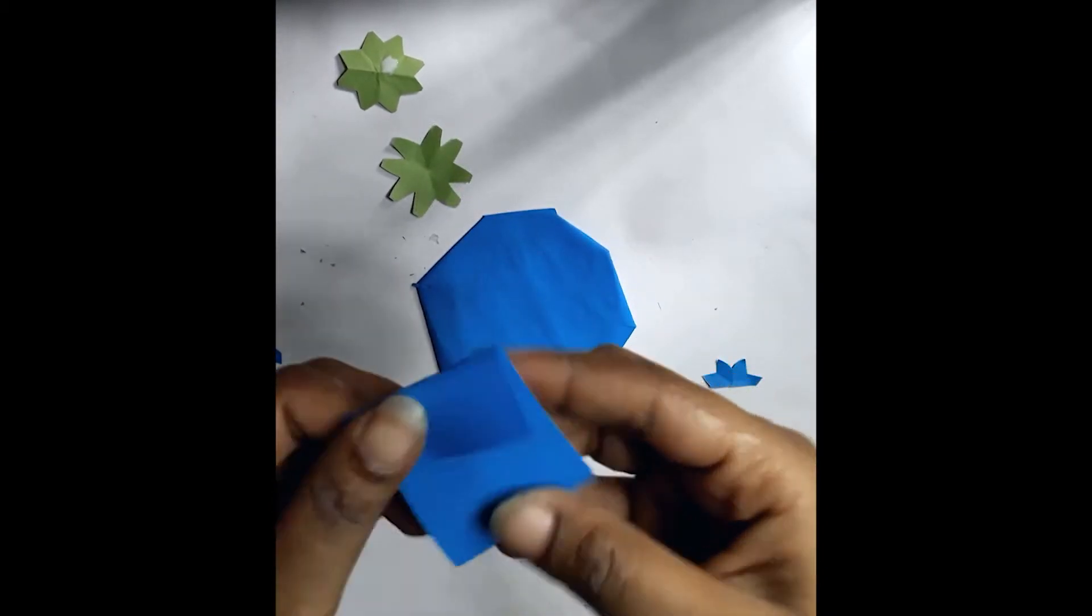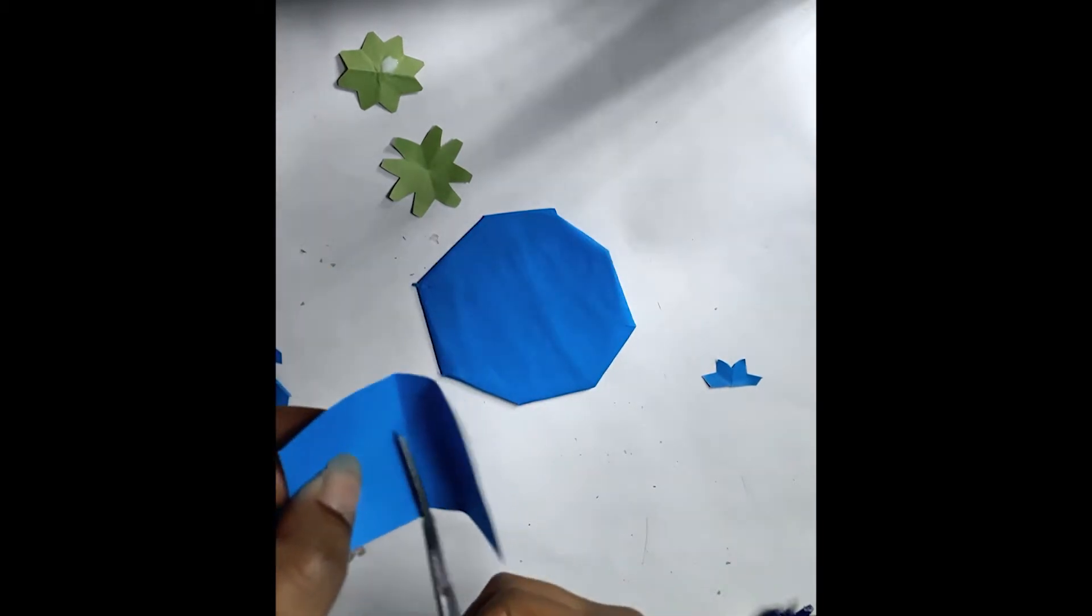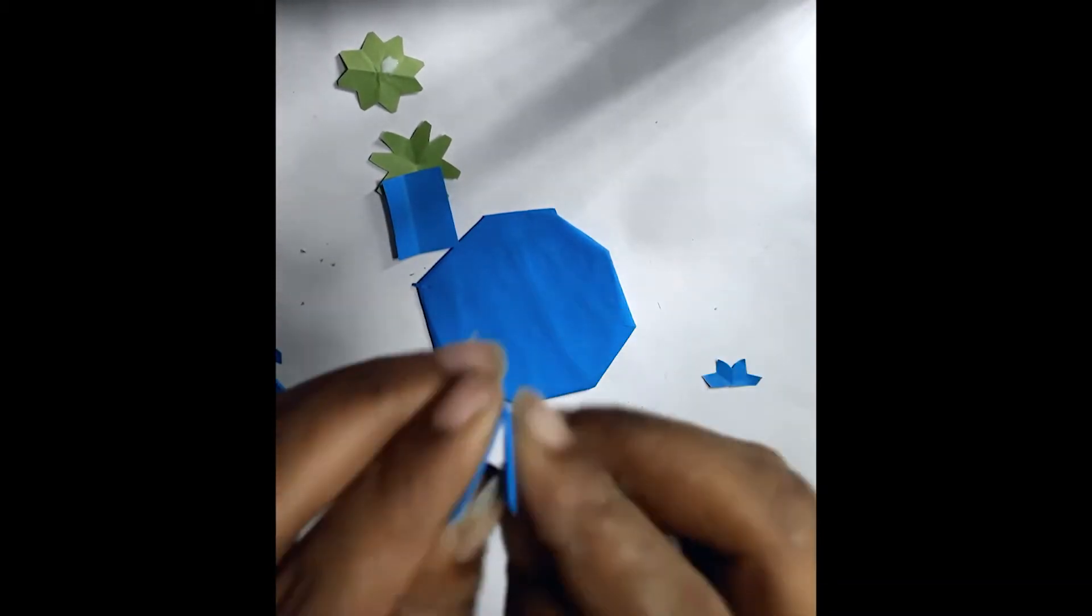Now take a blue color paper and crease it by a scissor as shown in the video. It makes another colored flower. Make more by the same way.